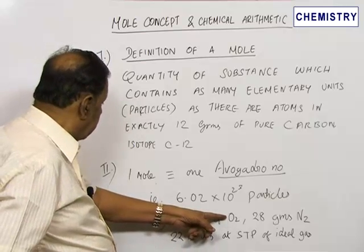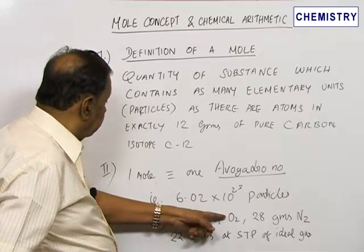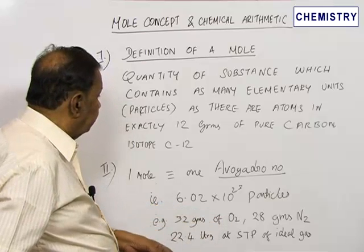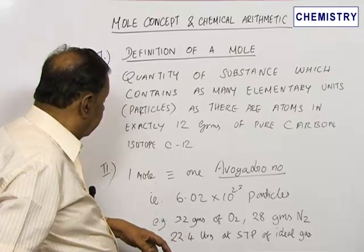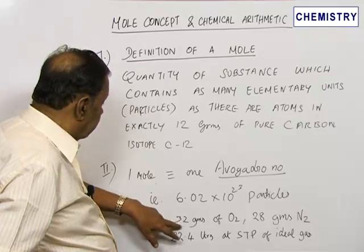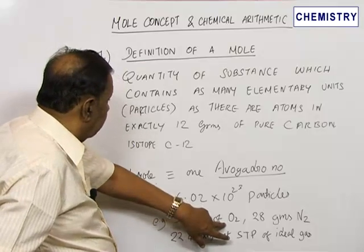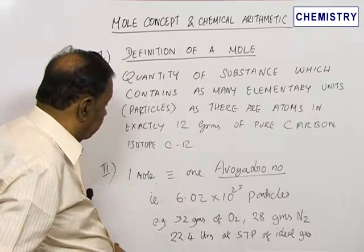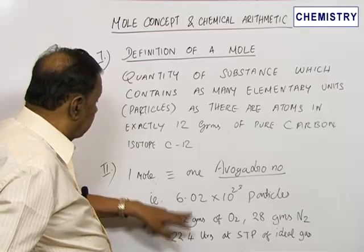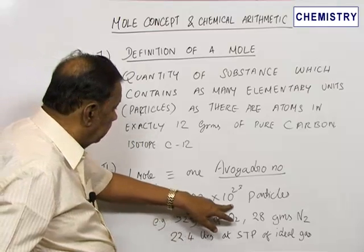Therefore, the molecular weight is 16 plus 16, which equals 32. If you take one molecular weight in grams, namely the gram molecular weight, it is 32 grams of oxygen. And 32 grams of oxygen is just one mole of oxygen and contains these many molecules.